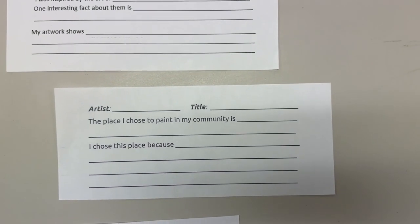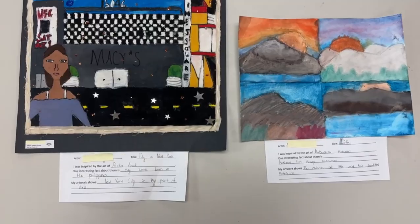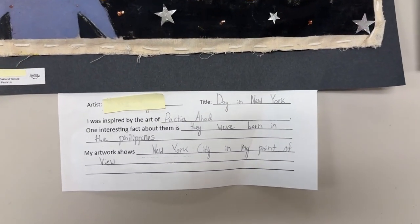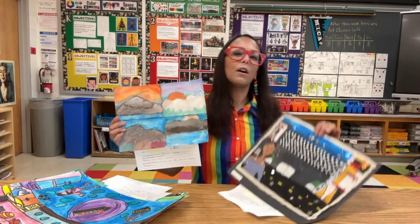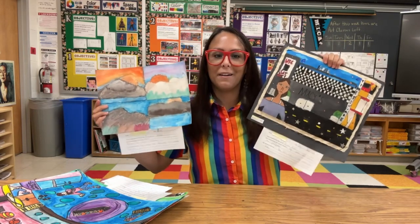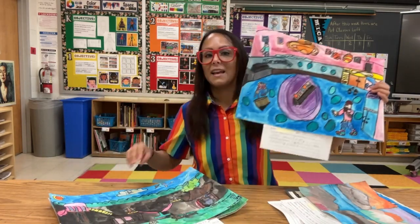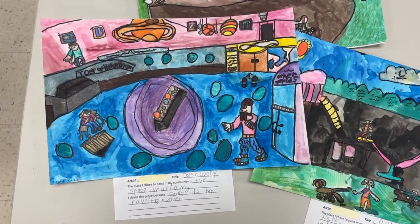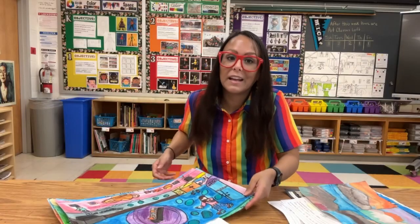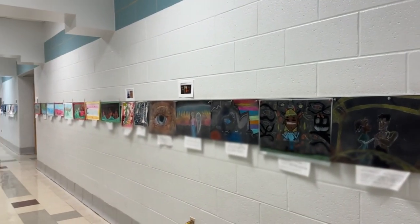Let's talk about labeling student artwork. I have all of my students make their own labels in the form of art statements. They write their name next to the space that says artist, then a title for their artwork, and then depending on the project, some additional information. Fifth grade students were researching an artist and creating a work inspired by that artist. Second grade students were making paintings of their favorite place in the community — they wrote the place they painted and a sentence explaining why they chose it. In kindergarten, I have them write just their name and maybe one word.